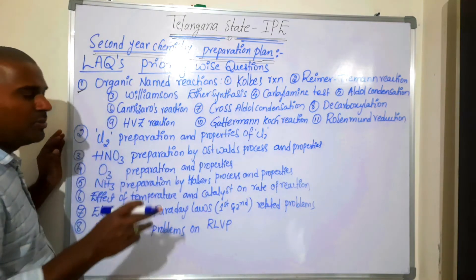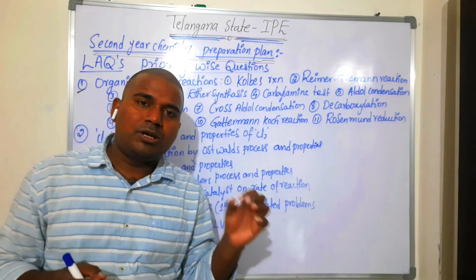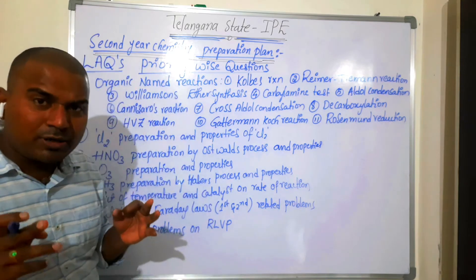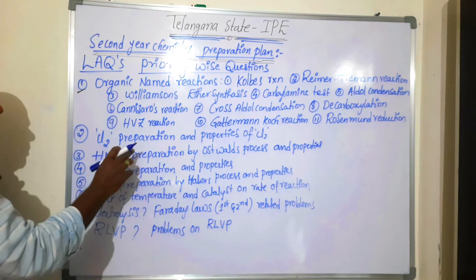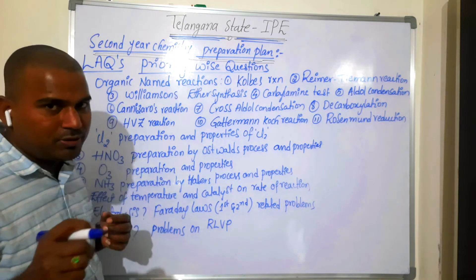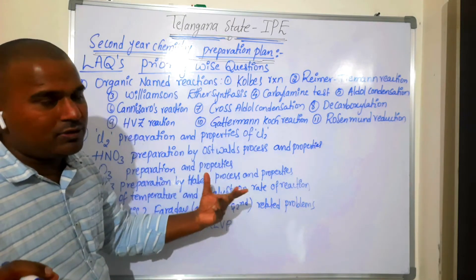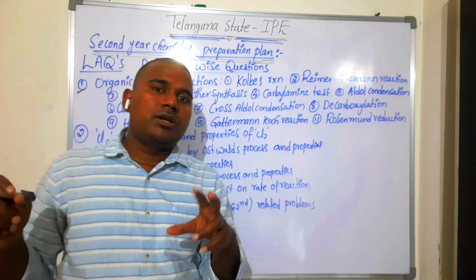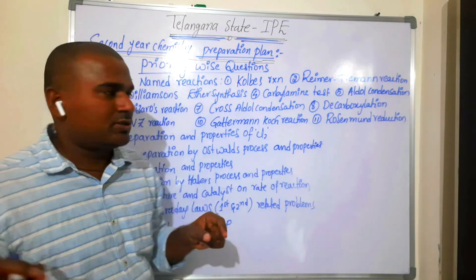Next, chlorine preparation and properties: chlorine preparation methods include laboratory preparation method, Deacon's process, and electrolysis process — learn preparation methods perfectly. Next, nitric acid by Ostwald process: preparation in three steps, then properties — how nitric acid reacts with phosphorus, sulfur, copper and zinc. For copper and zinc, two conditions: dilute HNO3 and concentrated HNO3.